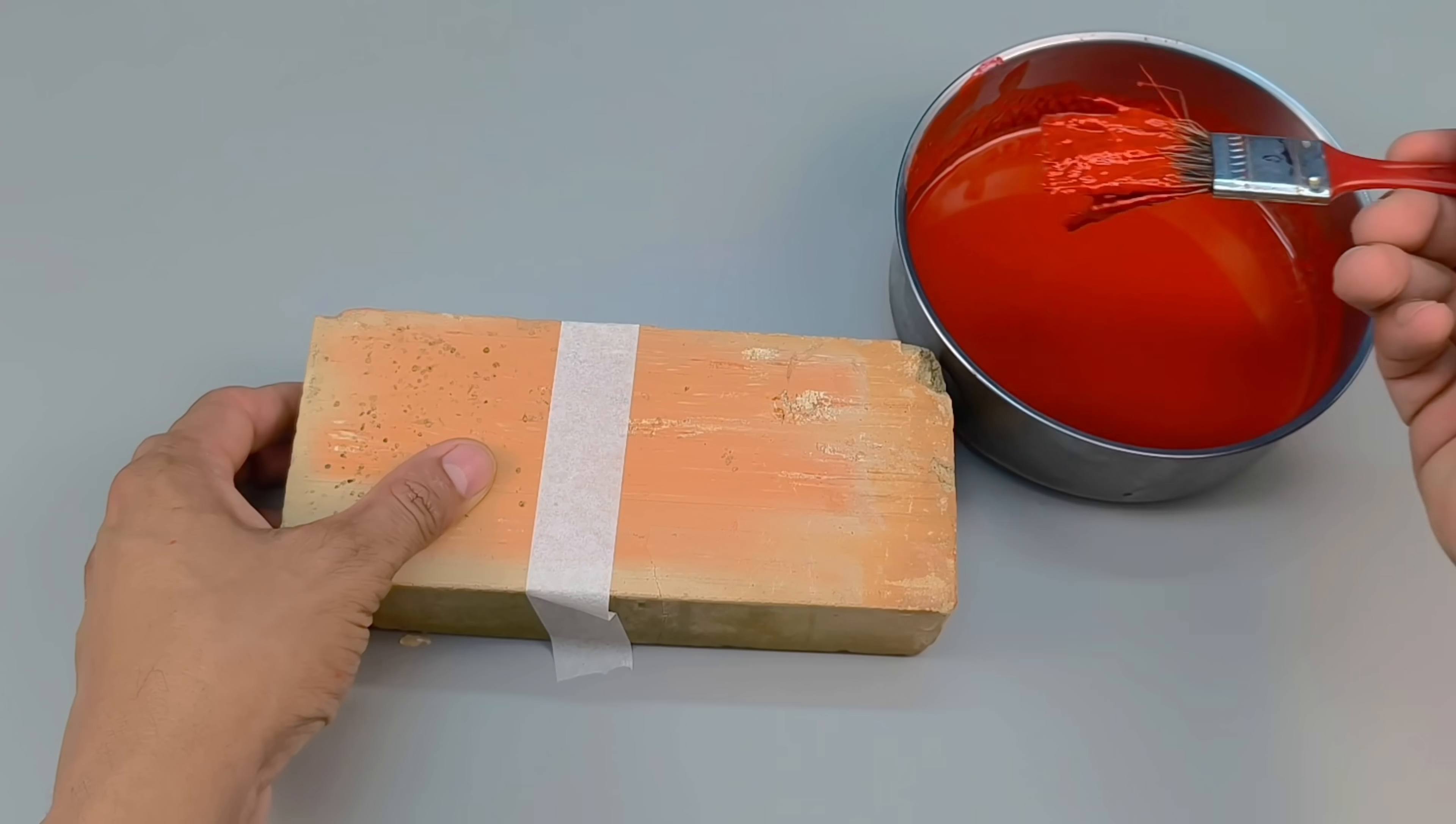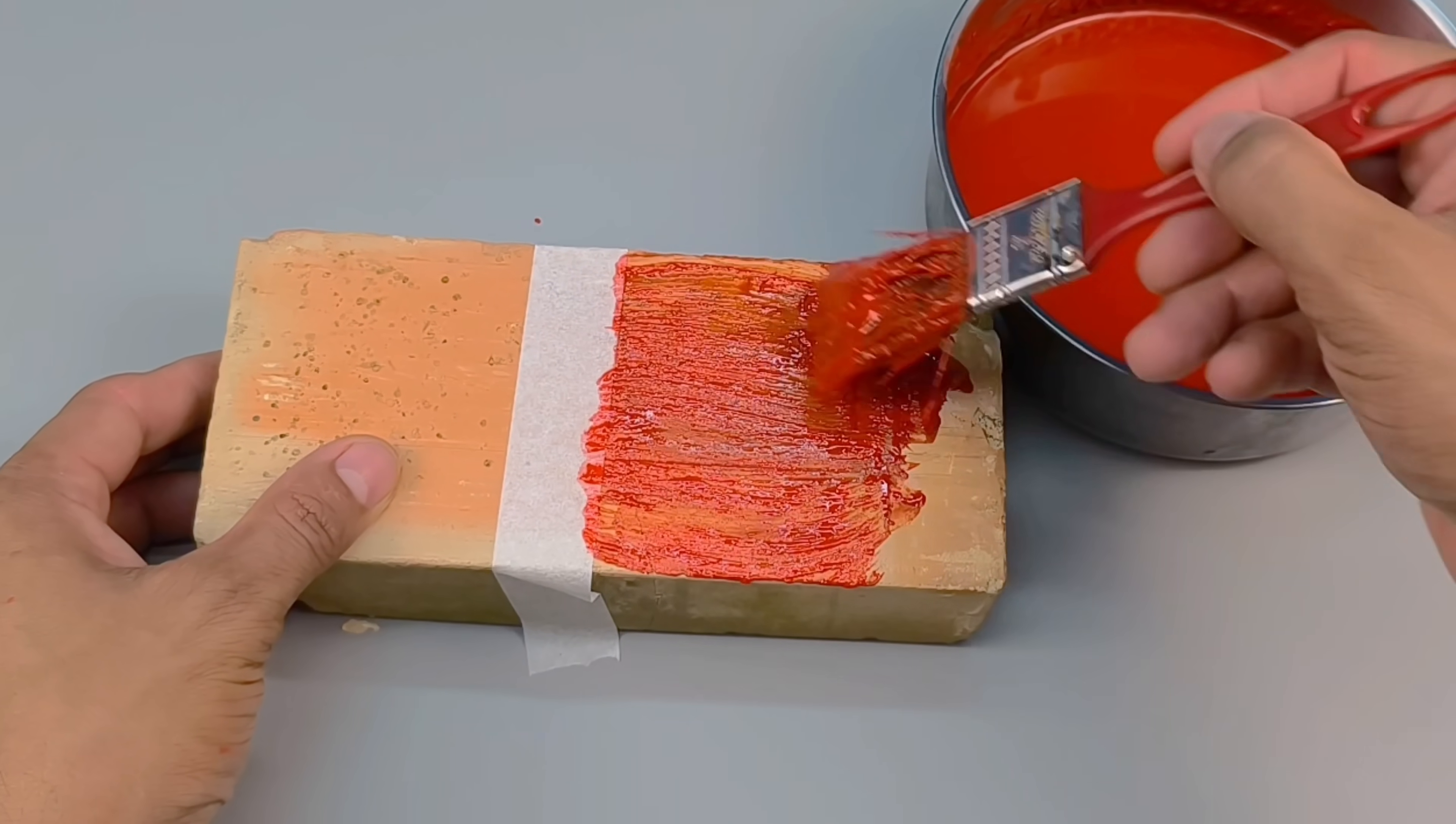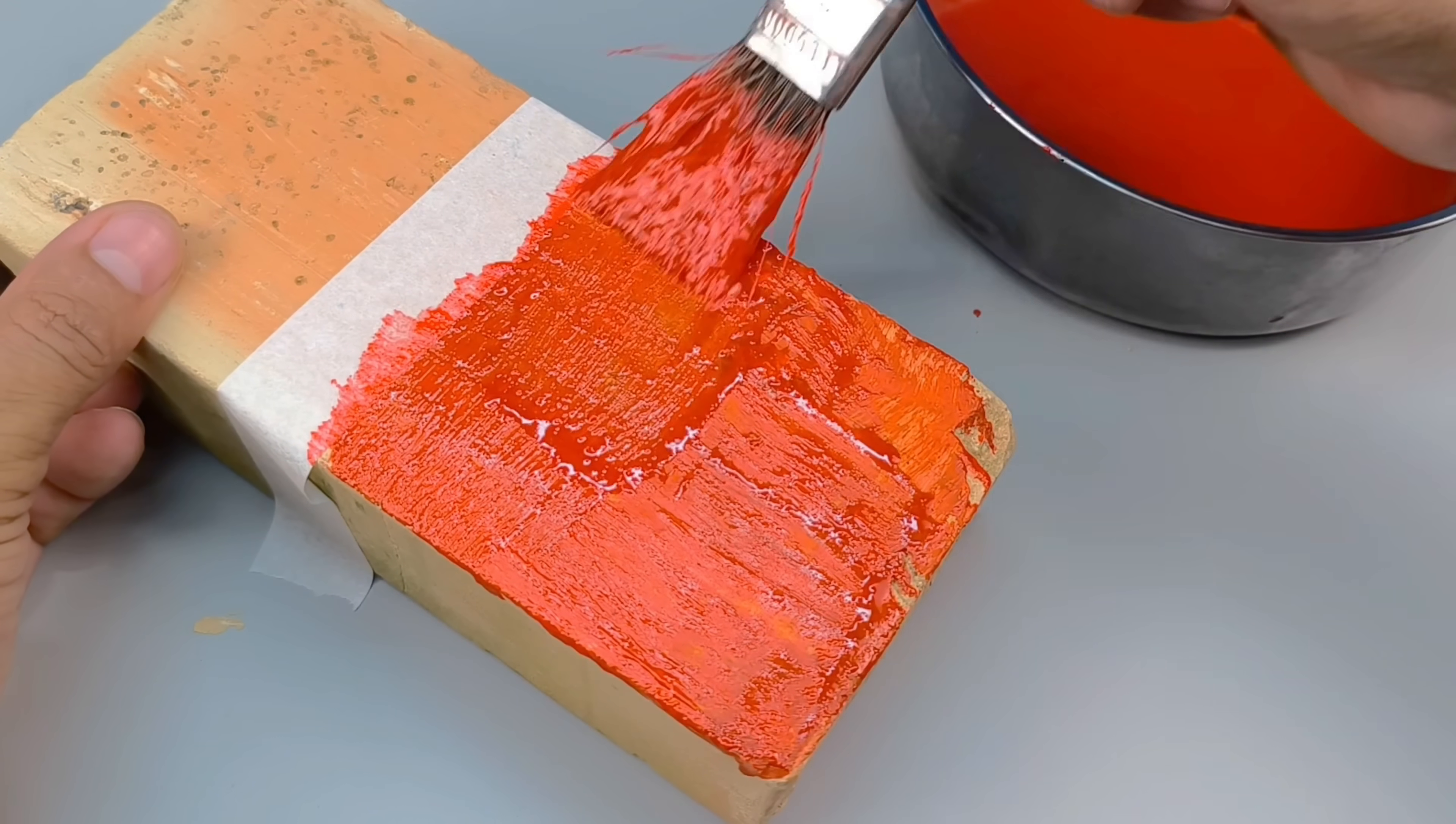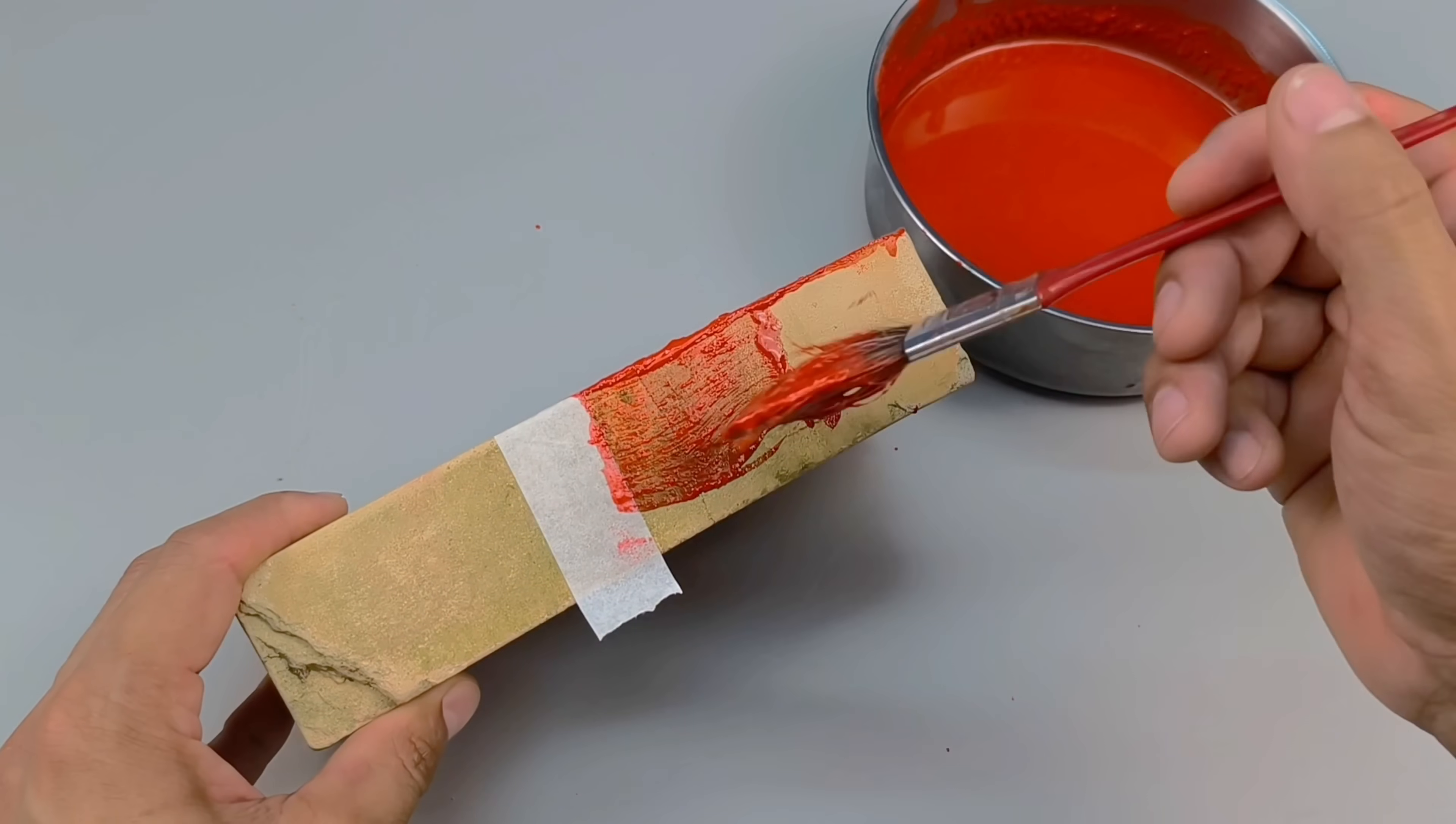Using a brush, I dip it into the newly created solution and begin applying the first coat. Almost immediately, the brick absorbs the liquid, revealing an unexpected shine and a stunning color transformation. In just a few seconds, the previously raw and lifeless surface begins to take on a renewed appearance, as if revitalized before our eyes.